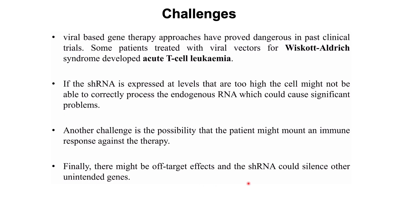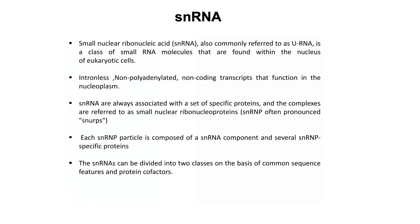Finally, there might be off-target effects where the shRNA could silence unintended genes. For example, an shRNA designed to target a specific gene could have high sequence similarity with another gene important for cell cycle and normal functions, disrupting normal cellular functioning. We have seen that shRNA functions similar to miRNA and siRNA in RNA interference, except that it is an artificial RNA molecule.